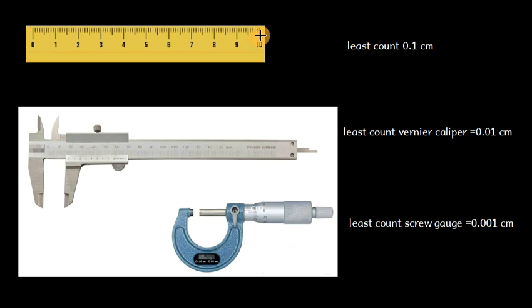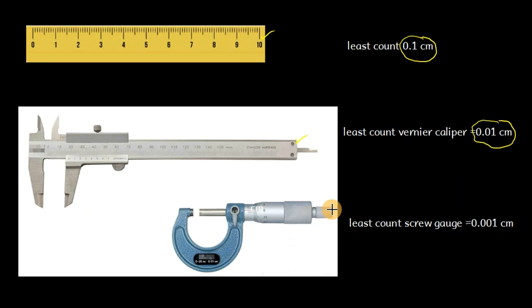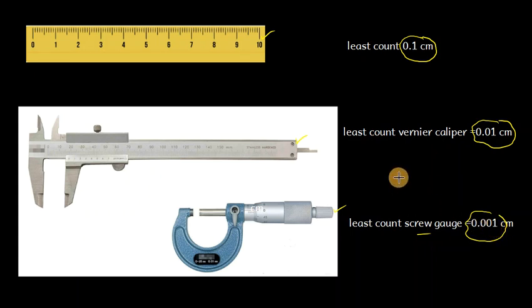For example, if one ruler has a least count of 0.1 cm and another ruler has a least count of 0.2 cm, then the ruler with 0.1 cm least count is more precise. Precision is inversely proportional to least count — a smaller least count means greater precision.